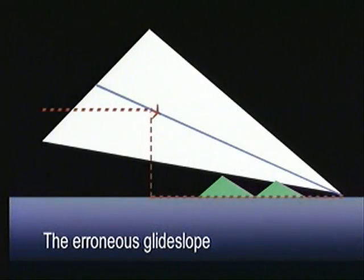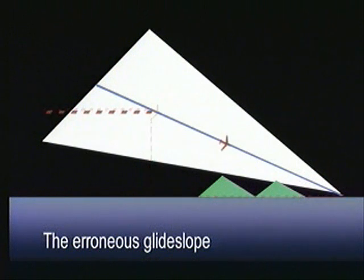The single distance-altitude check does not guarantee the subsequent descent path. Similarly, a single altitude check crossing the outer marker does not guarantee the glide slope is correct. The best strategy to employ is to periodically cross-check the aircraft altitude against distance during the descent.